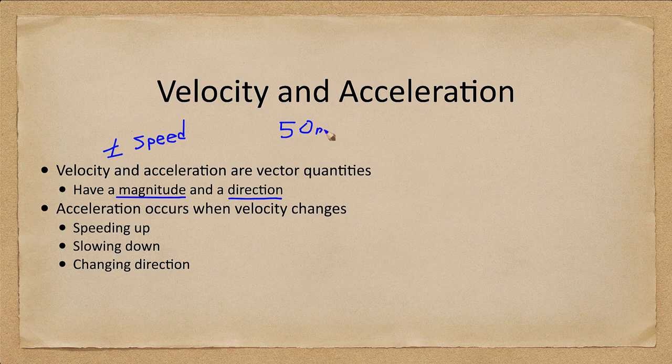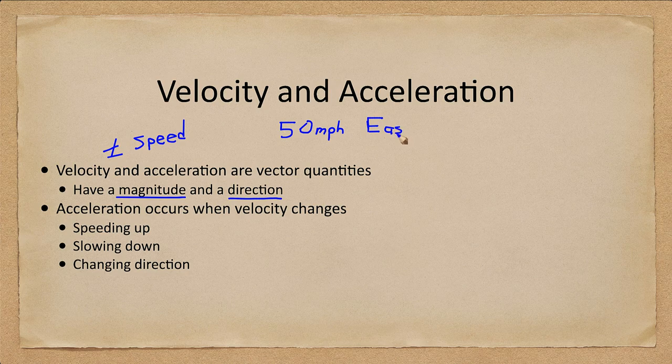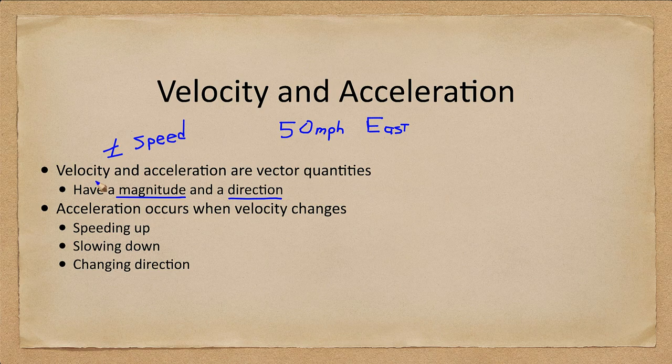It does not have a direction associated with it. So you could be going 50 miles per hour for example. And that would be your speed. In order to make it a velocity we need a direction. So 50 miles per hour say east. And that would give it a direction and that would be different than 50 miles per hour west. So those are different velocities even though the speeds are the same.